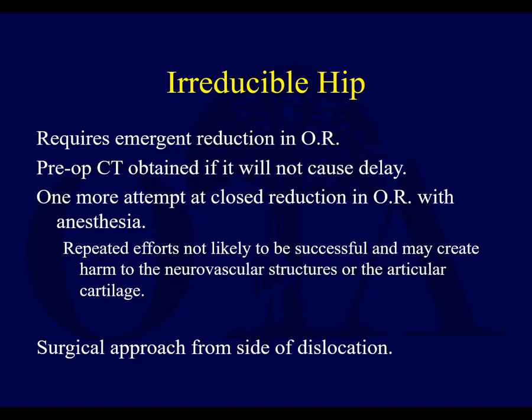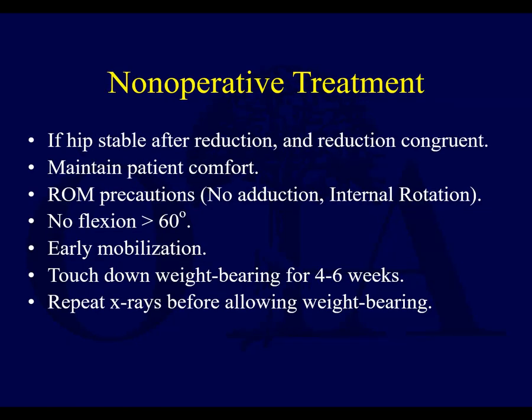Since you're going to the OR, if there's no delay, a CT scan could be helpful to make sure there are no surprises — like non-displaced fractures. Typically the surgical approach is from the side of the dislocation, so for a posterior hip dislocation you go posteriorly, being very careful that the sciatic nerve and other structures will not be in their normal anatomic position. If the hip is stable after reduction and the reduction is congruent, treatment is non-operative. There are precautions to prevent re-dislocation, but toe-touch weight-bearing is generally fine.